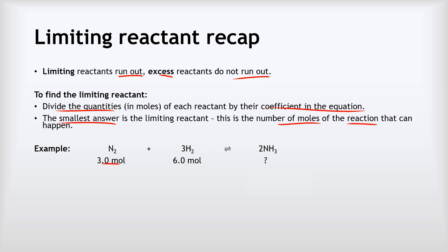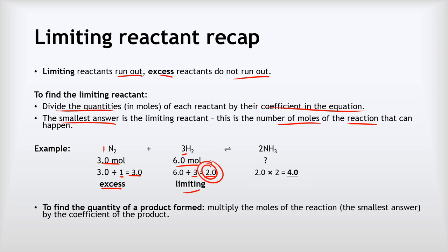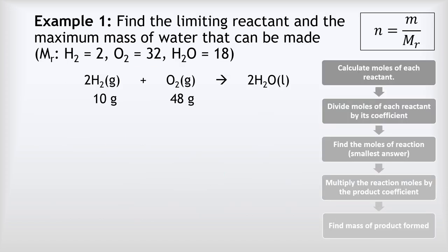For example, in this reaction where we have three moles of N2 reacting with six moles of H2, we divide each quantity by its coefficient: three divided by one gives three for nitrogen, and six divided by three gives two for hydrogen. The smallest answer is two, so hydrogen is the limiting reactant and nitrogen is in excess. To find the moles of ammonia we can form, we take that two and multiply by the coefficient of NH3, which is two, giving four moles of ammonia.